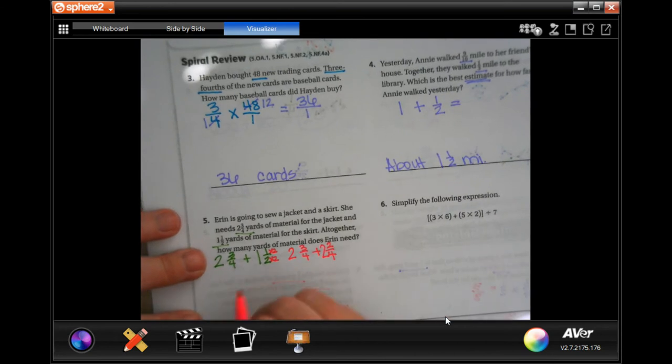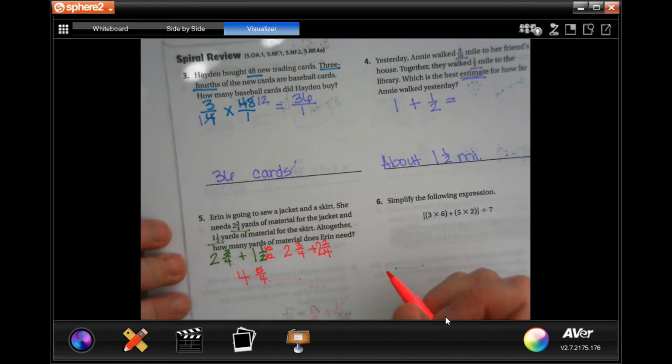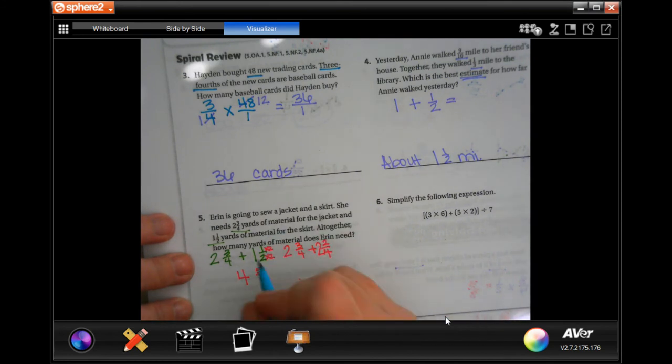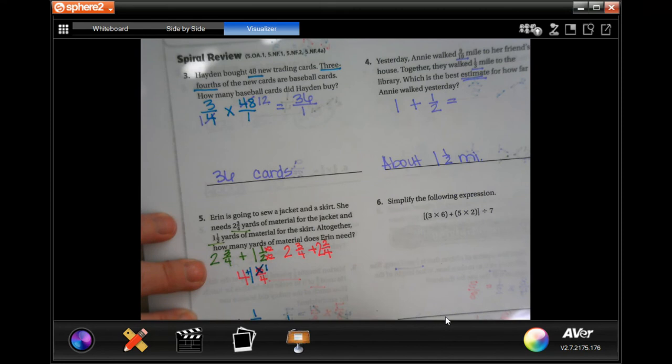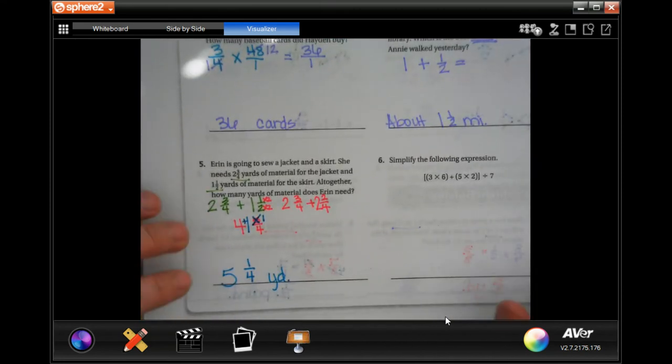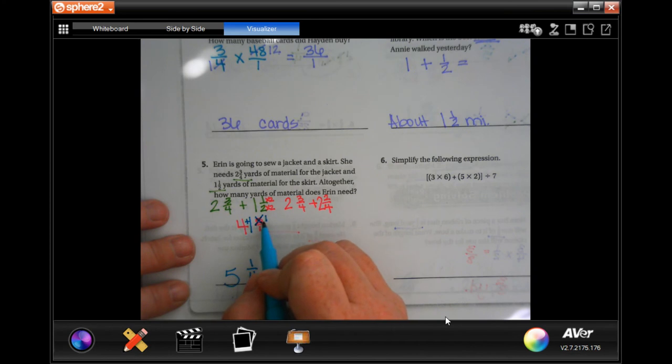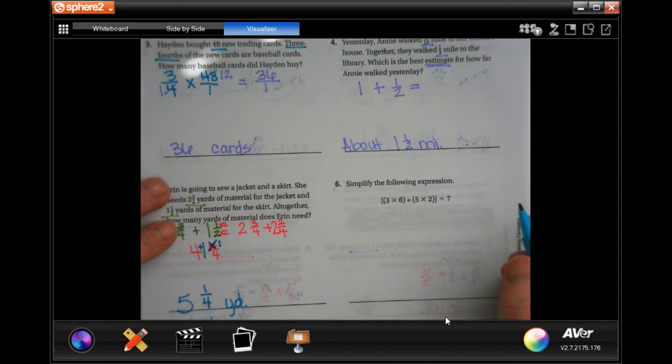So now, 2 plus 2 is 4. 3 plus 2 is 5. And my denominator stays a 4. You will notice that the top is bigger than the bottom. We can't do that. So, I'm going to go. So, 4 goes into 5 one time. I would have 1 left over. And my denominator stays 4. So now, I'm going to have 5 and 1 quarter yard.